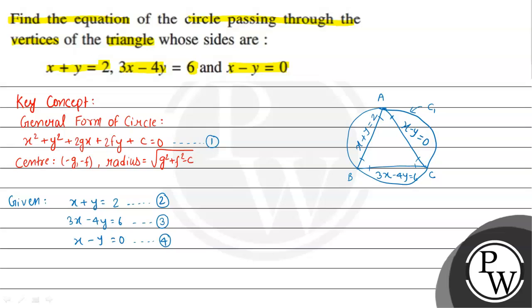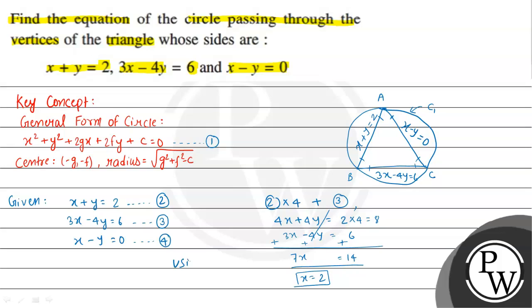First, in equation 2 we multiply by 4 and then add equation 3. We get 4x plus 4y equal to 8 and 3x minus 4y equal to 6. Adding these, the 4y and minus 4y cancel, giving 7x equal to 14, so x equals 2. Using equation 2, x plus y equal to 2: putting x equal to 2 gives y equal to 0. So the coordinate of point B is (2, 0).